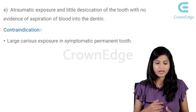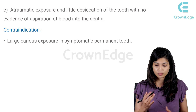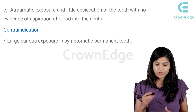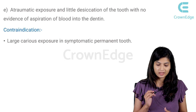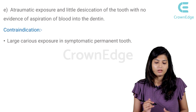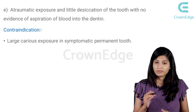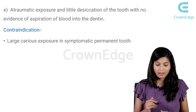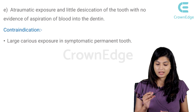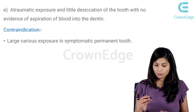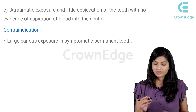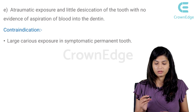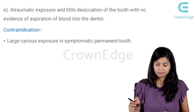Another indication is a traumatic exposure with little desiccation of the tooth and no evidence of aspiration of blood into the dentin. The contraindication of direct pulp capping is whenever there is a large caries exposure in a symptomatic permanent tooth — in that condition direct pulp capping cannot be done.